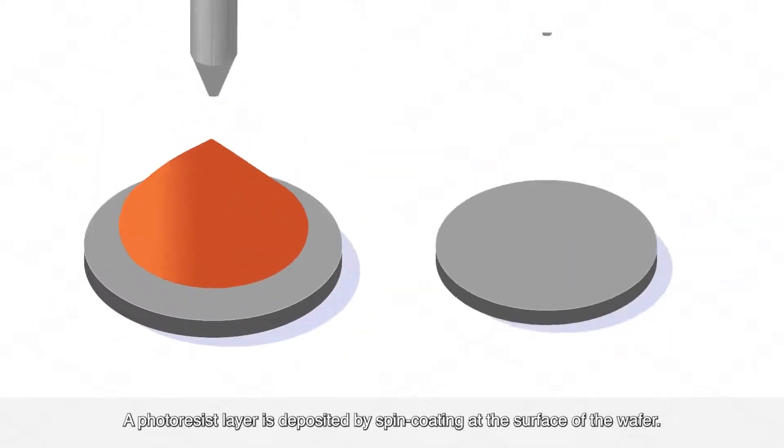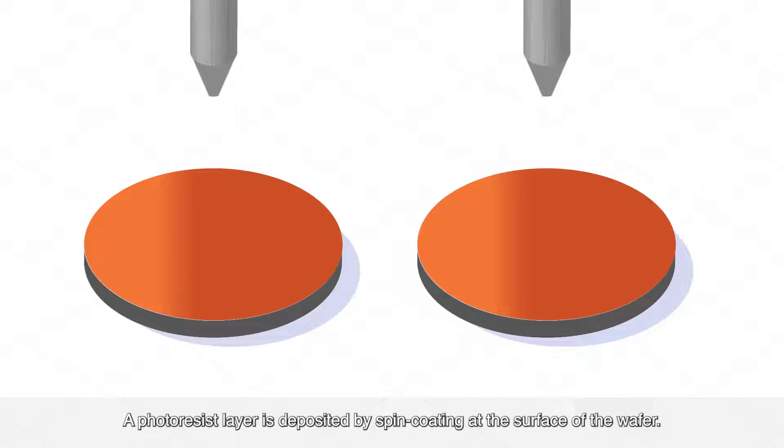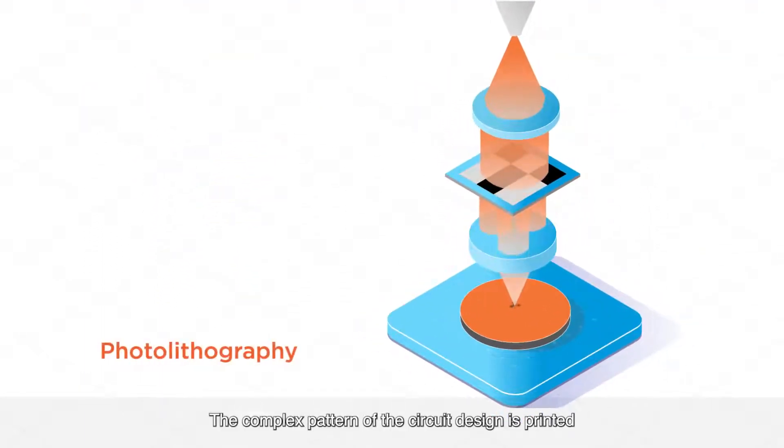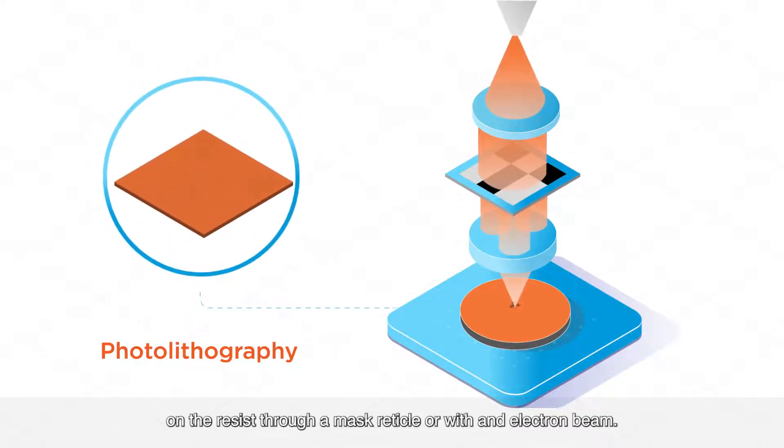A photoresist layer is deposited by spin coating at the surface of the wafer. The complex pattern of the circuit design is printed on the resist through a mask reticle or with an electron beam.